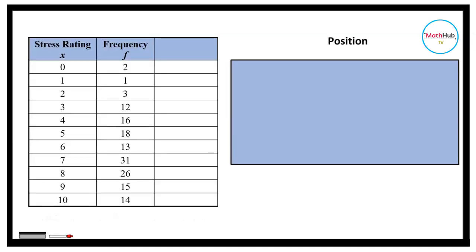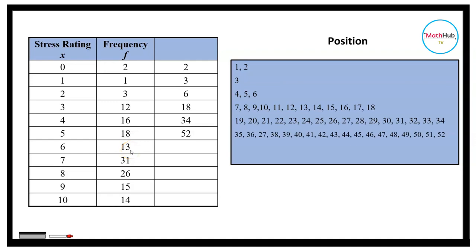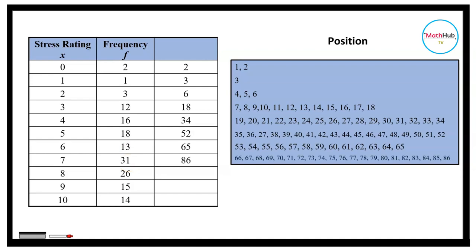To locate the median stress level rating, count down the frequency column: 2, plus 1 gives 3, plus 3 gives 6, plus 12 gives 18, plus 16 gives 34, plus 18 gives 52, plus 13 gives 65. From 65, we still have 31 more in the next group, which takes us past 76. So the 76th data item falls in this group, and therefore the median stress level rating is 7.